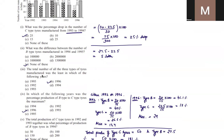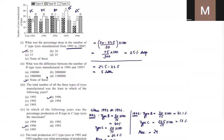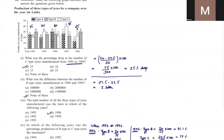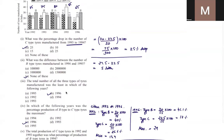The third question asks in which year was the total number of all three types of tires the least. You have to sum up figures for all three types each year. For example, 25 plus 20 plus 30 equals 75. The least total is 65 lakhs, which corresponds to 1996 — that is the answer.